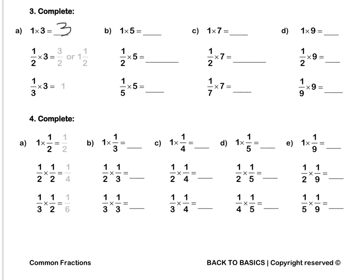Question B. 1 times 5 is 5. A half times 5: the 5 goes to the top, so it's 5 over 2. Or, as a mixed number, it's 2 and a half. 1 fifth times 5 will be 5 over 5, or 1 whole.